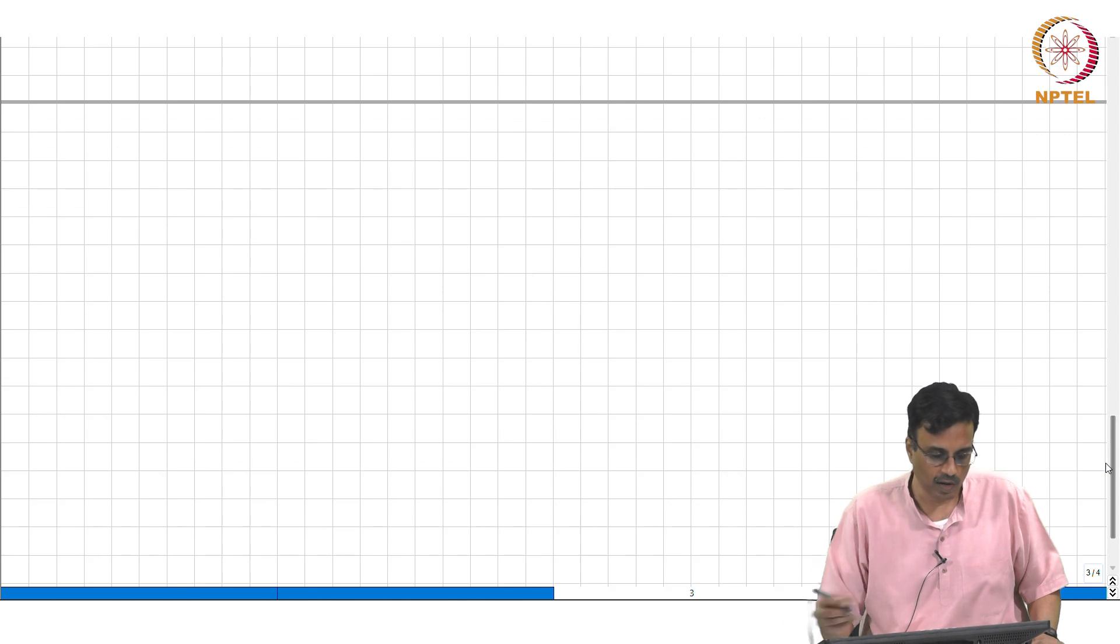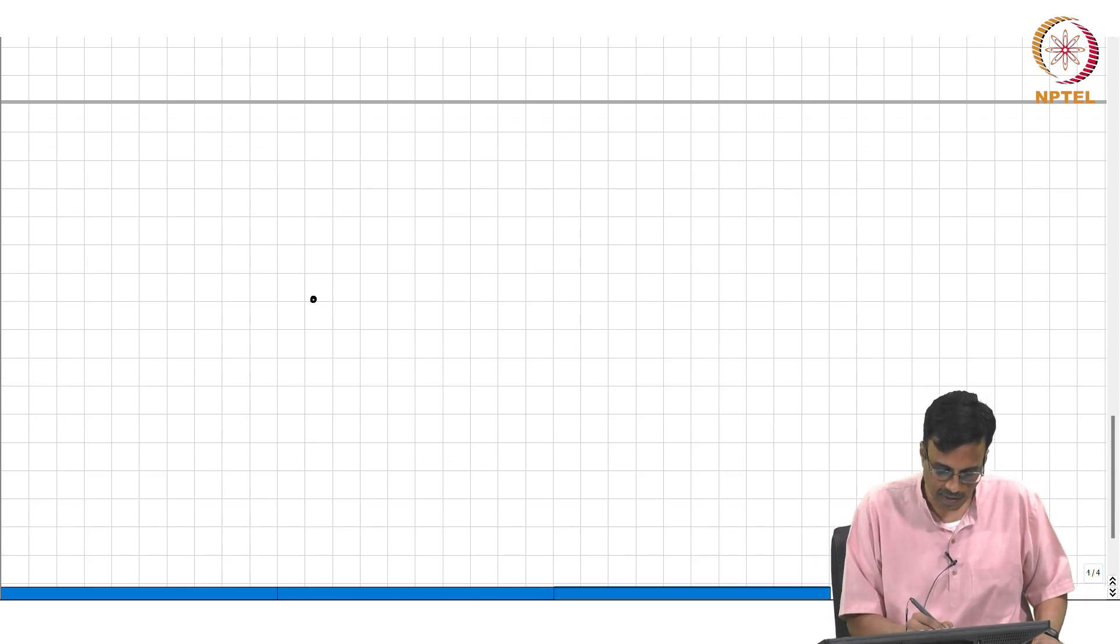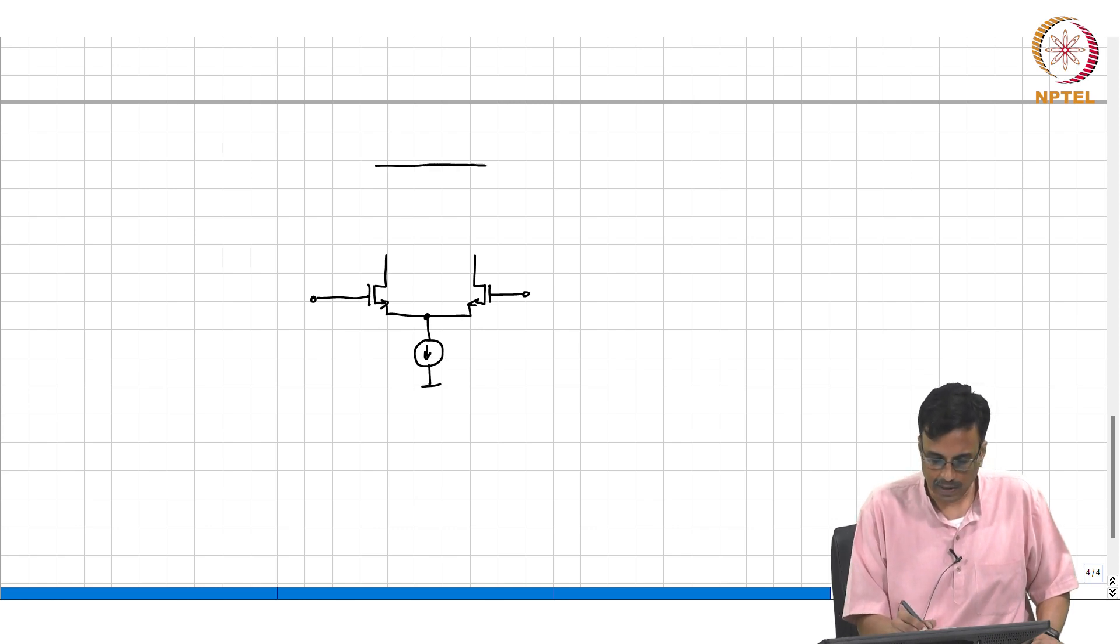I want to spend a few minutes talking about the large signal properties. I'm not going to do it with the active load, I'll do it with the resistive load, where lambda n equals lambda p equals 0.